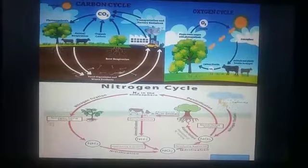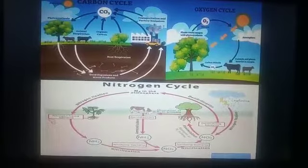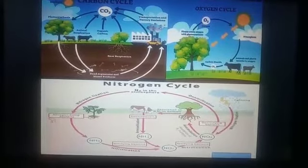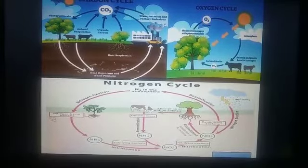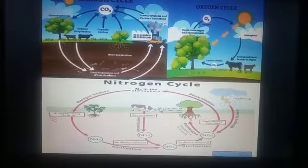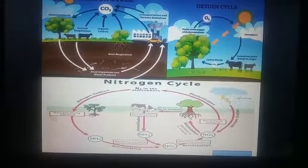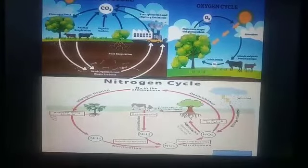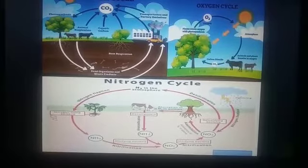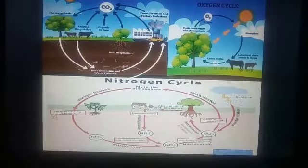Now we shall discuss the third important cycle, which is known as the nitrogen cycle. Nitrogen is the most important component of the atmosphere and accounts for as much as 78.08% of all atmospheric gases. It is also an essential constituent of different organic compounds such as amino acids, nucleic acids, proteins, vitamins, and pigments. The nitrogen cycle may be defined as the movement of nitrogen among soil, water, air, and living organisms. Organisms such as species of soil bacteria and blue-green algae are able to utilize nitrogen directly in the gaseous form.